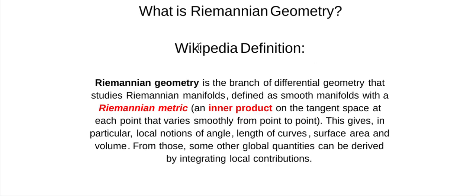I donate to Wikipedia, so I'm very comfortable in ripping them off. Riemannian geometry is a branch of differential geometry that studies Riemannian manifolds. And what's a manifold? Just think of it as a space — it's just a space. But it needs to be smooth and differentiable. And it has a metric, a Riemannian metric, made up of inner products. If it has a metric, we can use that to define angles, lengths, areas, and volumes — you can use it to measure real things.